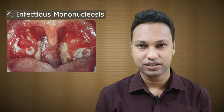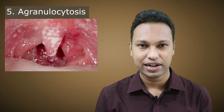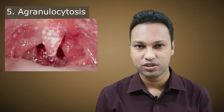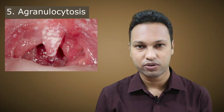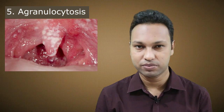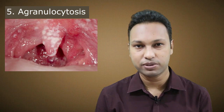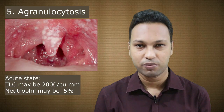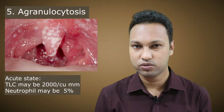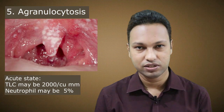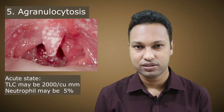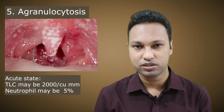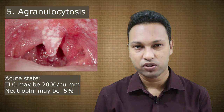Number five etiology is agranulocytosis. Agranulocytosis presents with ulcerative lesions that may be present not only in the throat but anywhere in the body. The patient is severely ill in the acute fulminant stage. The leukocyte count may be as low as 2,000 per cubic millimeter, and neutrophil count may be reduced to five percent. In chronic or recurrent cases, the leukocyte count may be low but the neutrophil count may not be as low as expected.